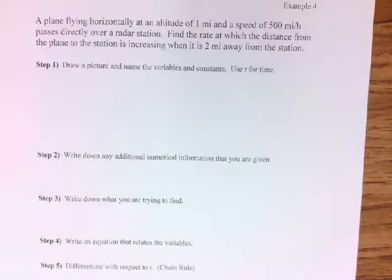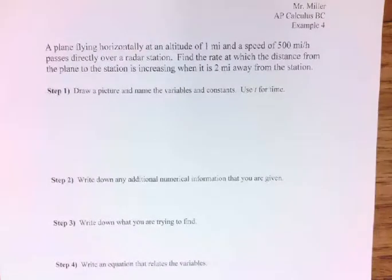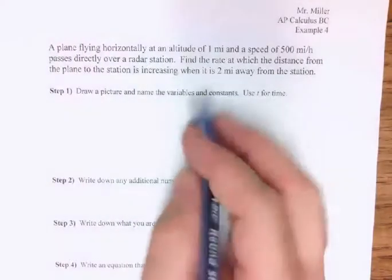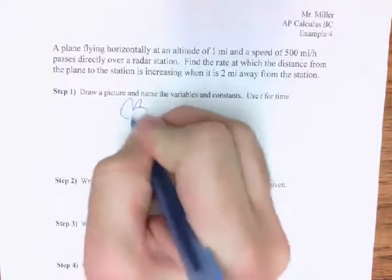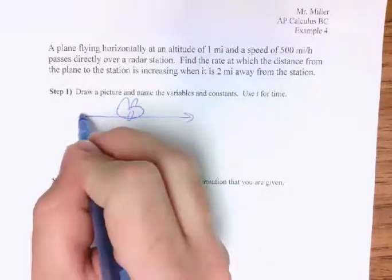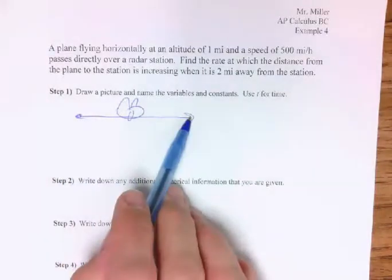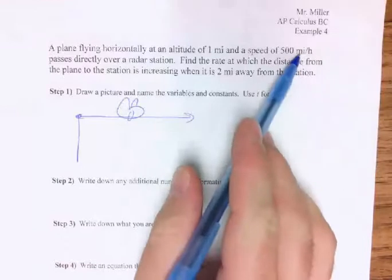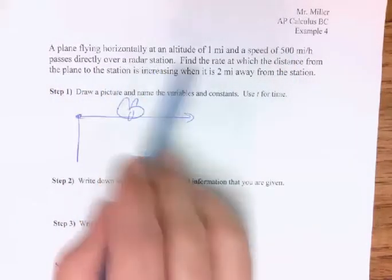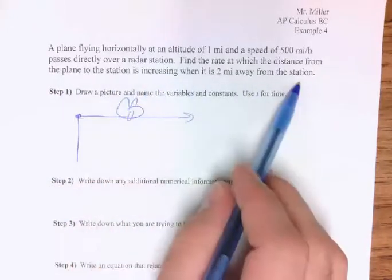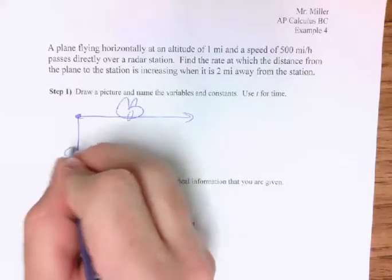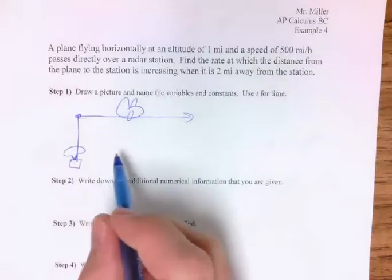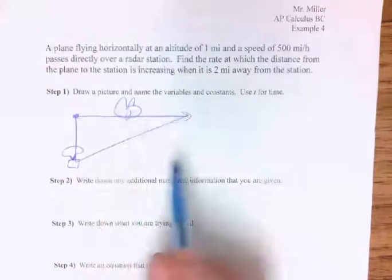There's your third example. Pause it again and see if you can do this one without any help — only hit play when you're ready to check or if you're totally stuck. We've got a plane flying horizontally at an altitude of 1 mile with a speed of 500 miles per hour, passing directly over a radar station. Find the rate at which the distance from the plane to the station is increasing when the plane is 2 miles from the station.